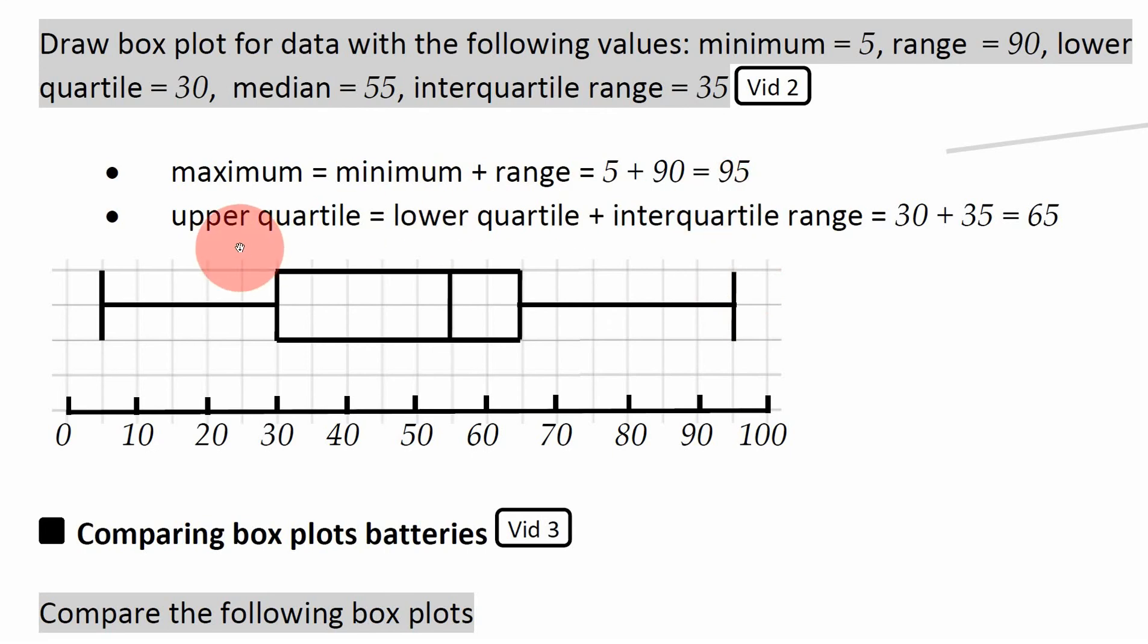In a similar way, if you want to work out the upper quartile and you know that the lower quartile is 30, and the interquartile range, which is the space between the lower quartile and the upper quartile, is 35, you do 30 plus 35. That gives you 65, which will be the upper quartile.